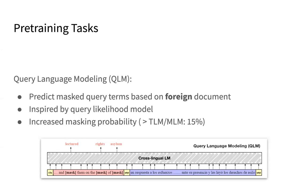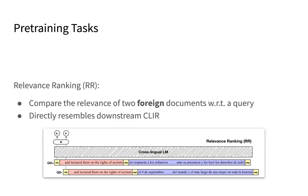The first pre-training task we introduce is called query language modeling. The idea is that after concatenating query and document into one sentence, we mask a large part of the query and let the model predict the masked query terms based on foreign documents. The idea is motivated by the query likelihood model, where the query is assumed to be generated based on words that appear in a prototype document. Specifically, we increase the masking probability to make it hard for the model to infer the masked query terms based on unmasked query terms, such that it has to reference foreign documents to make accurate predictions.